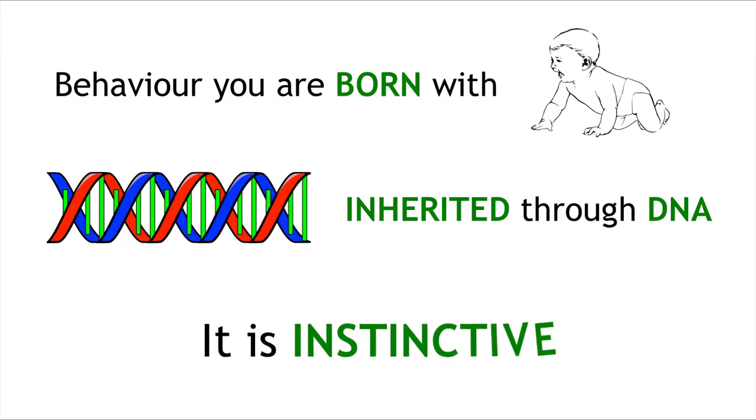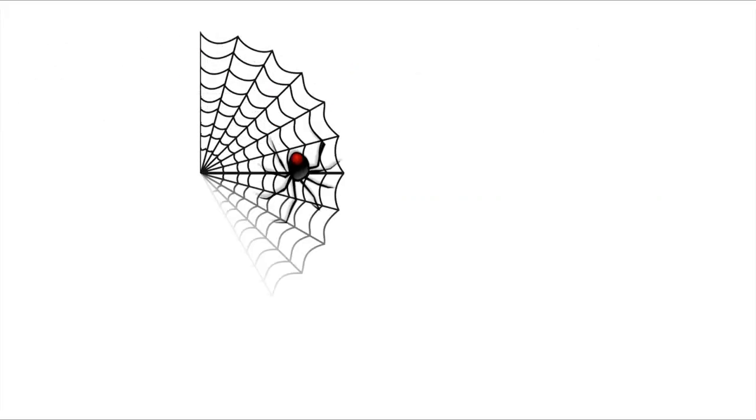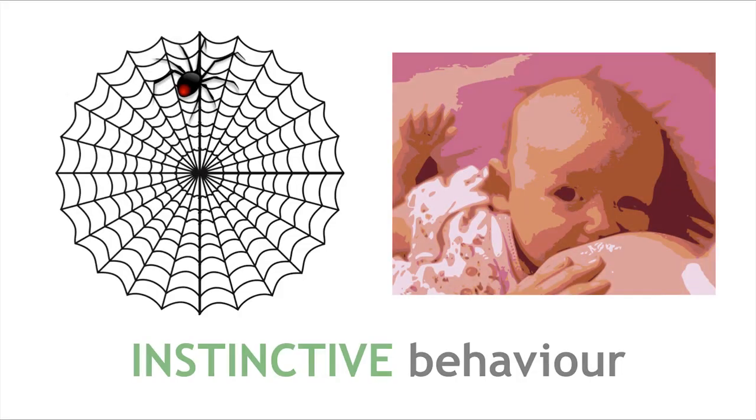For example, a spider knows how to spin a web as soon as it is born, or a baby can suckle because it is instinctive.